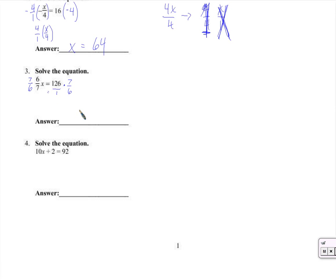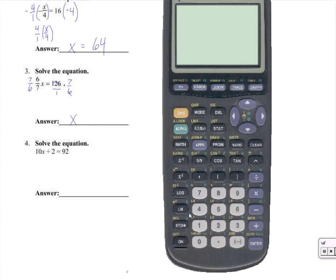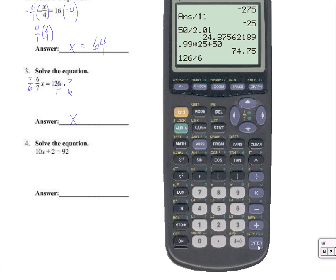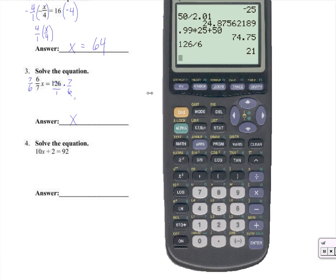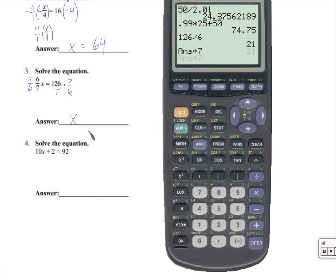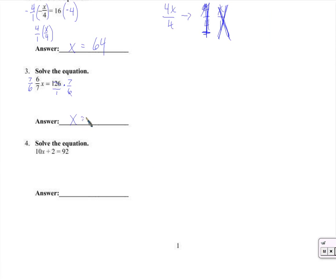So here we have 1 times x, that's x. 126 times 7 over 6 — do we have cross cancellation? Yes we do. 126 divided by 6 is 21. So we have 21 times 7, which is 147.